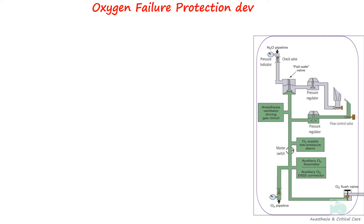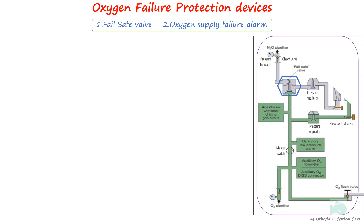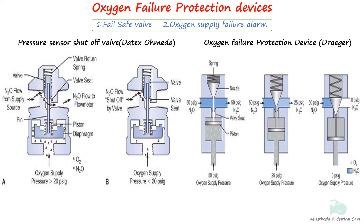One of the serious mishaps with early anesthesia machines was the depletion of oxygen supply, resulting in administration of 100% anesthetic gas leading to hypoxemia. An oxygen failure safety device and oxygen supply failure alarm are installed on anesthesia machines to ensure the patient does not receive a hypoxic gas mixture when oxygen pressure reduces. Machine standard requires that whenever oxygen supply pressure falls, the delivered oxygen concentration does not fall below 19% at the common gas outlet. Different oxygen failure safety device technologies control the amount of nitrous oxide flow depending on oxygen pressure — these are the pressure sensor shutoff valve and the oxygen failure protection device.